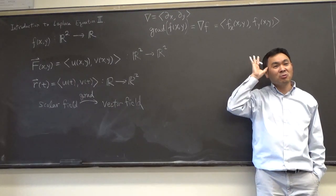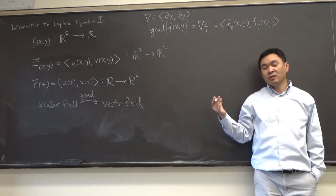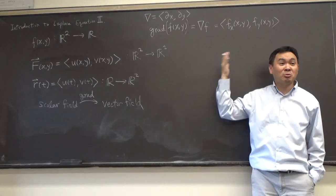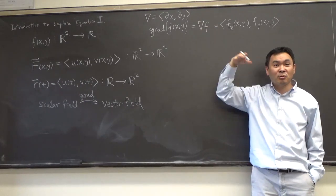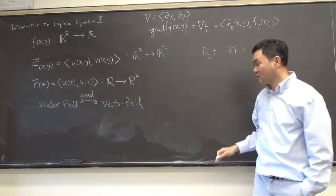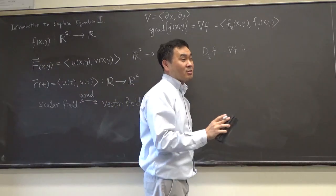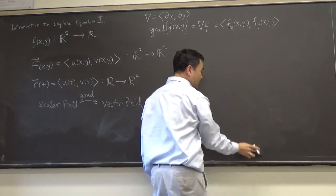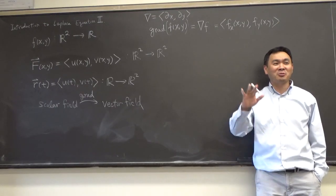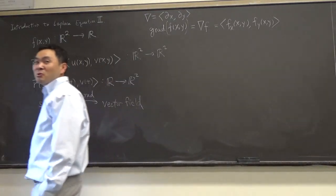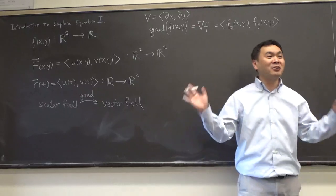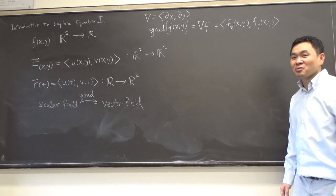That's something you learn in vector calculus — it takes a while. You have to look at the interaction between the level curves of f and the directional derivative, and there's a formula: the directional derivative of f in the direction of û equals the gradient of f dot û. From this you can conclude that the gradient gives you the fastest increasing direction. If you didn't learn this, you can go to my YouTube channel and watch the videos on gradients.